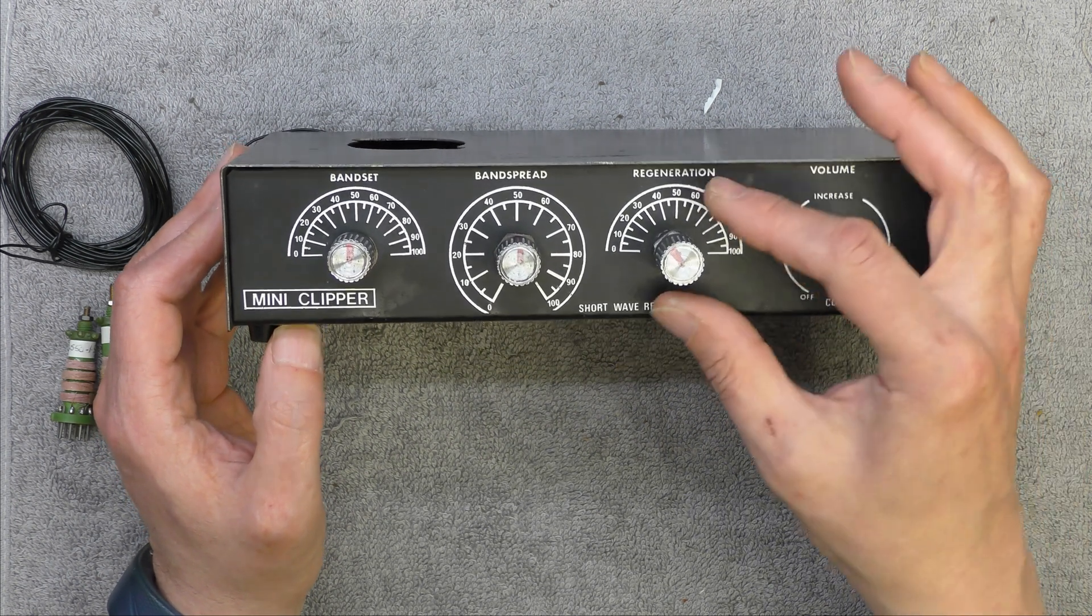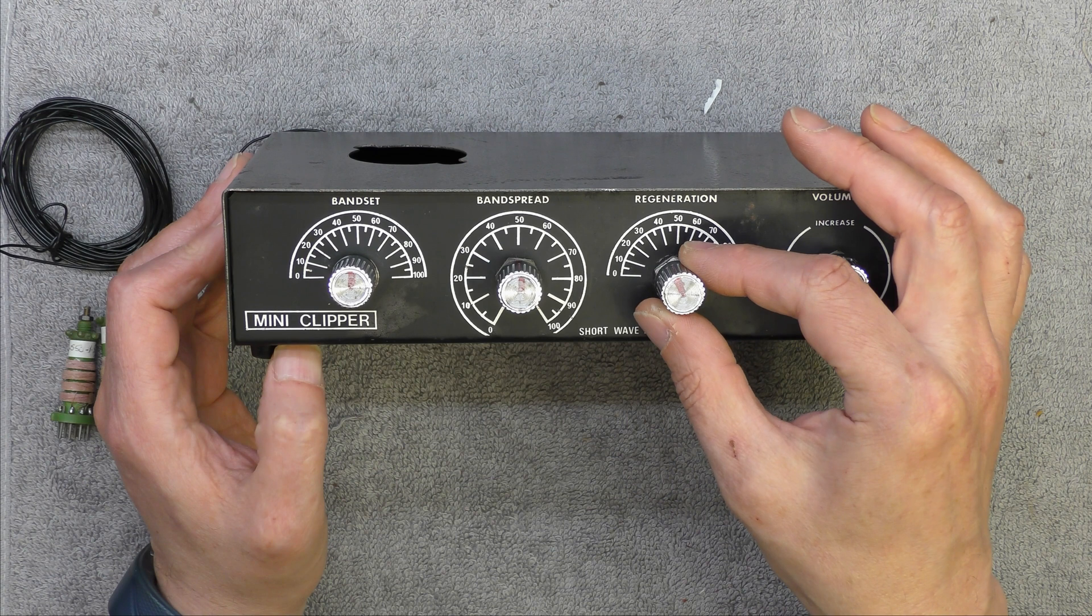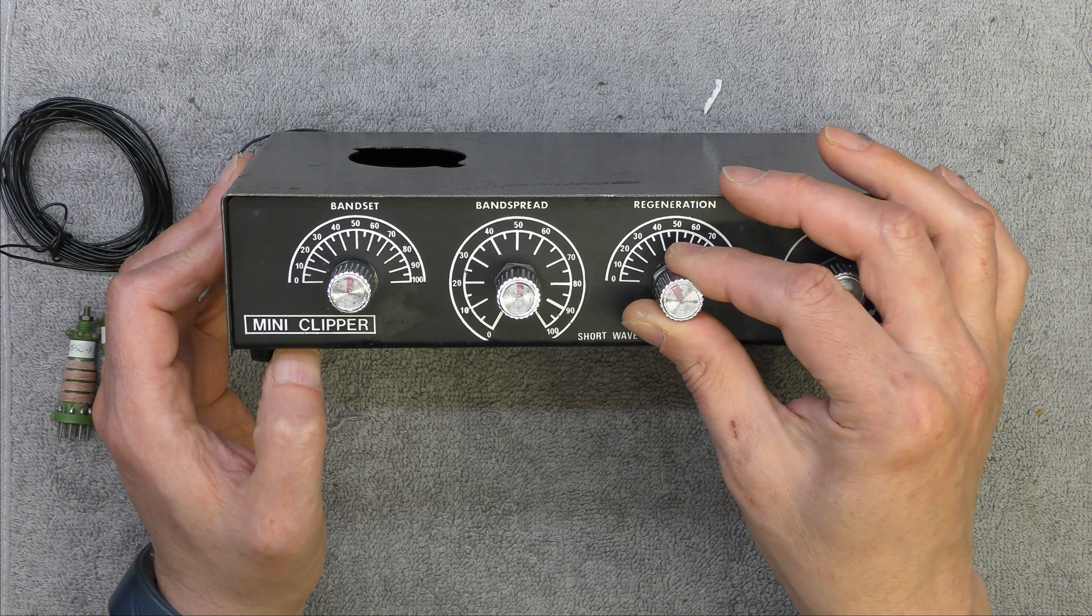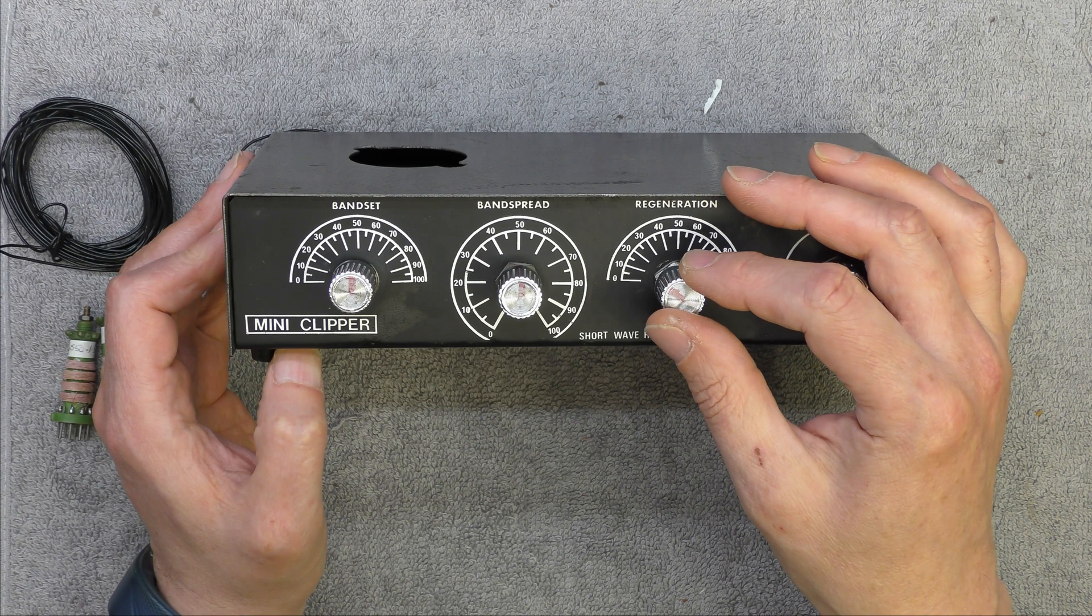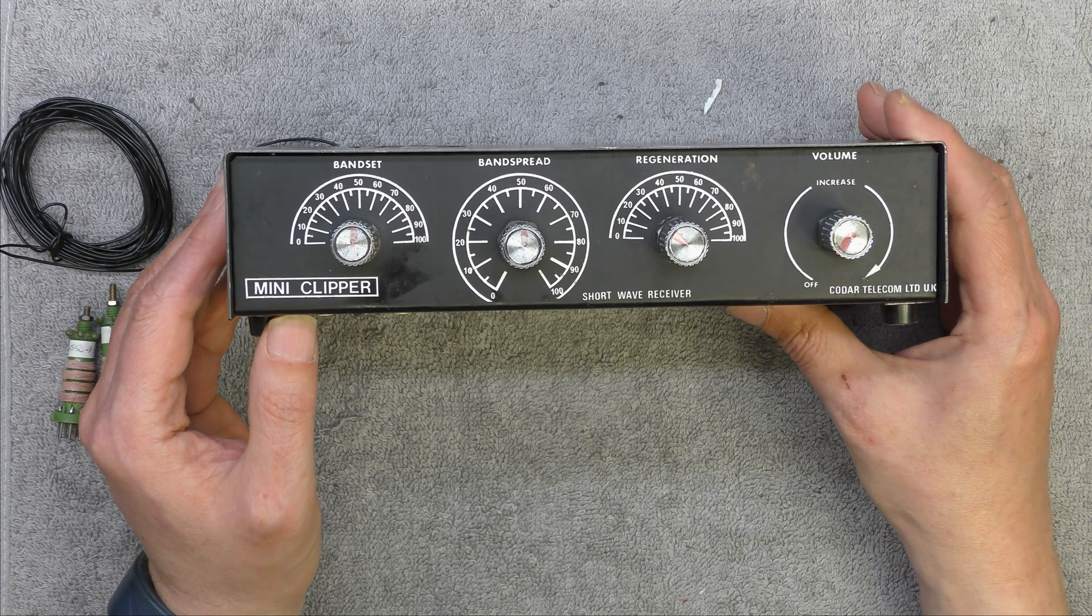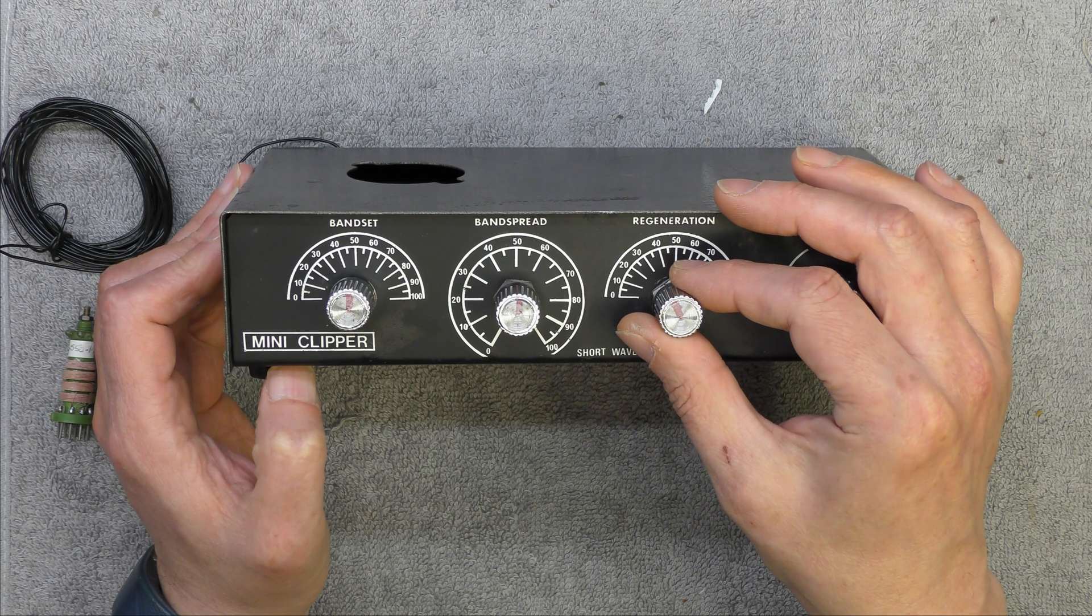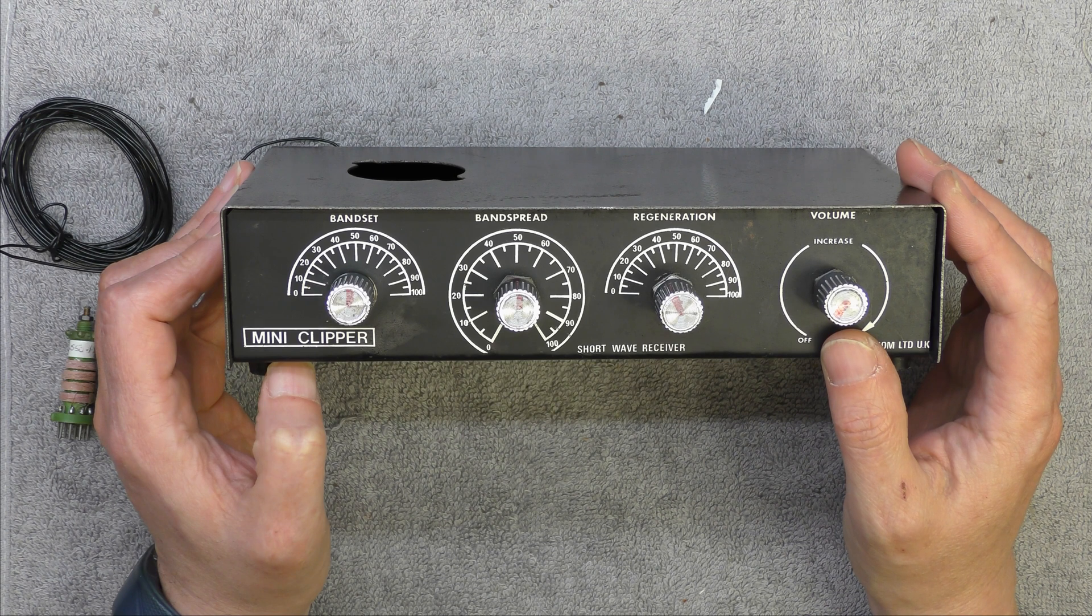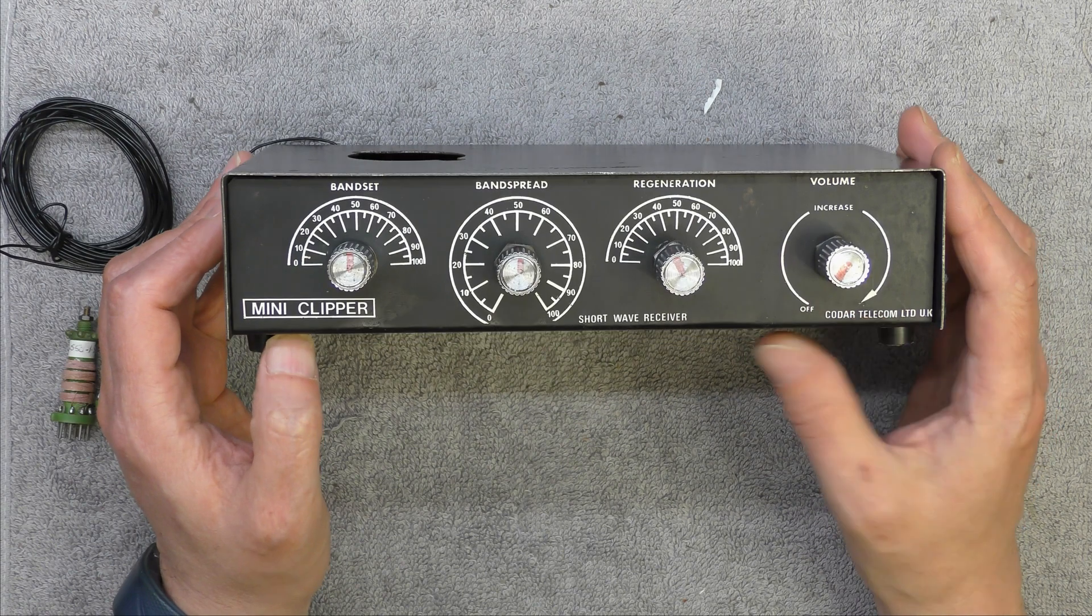Basically it's a TRF receiver - tuned radio frequency receiver - and has regeneration, which is positive feedback. You feed some of the amplified signal back into the input and keep it just below the point when it starts to oscillate, and this increases the gain greatly. This only has three transistors in. You can increase the regeneration so it does oscillate to try to decode SSB, but I don't know how good that is.